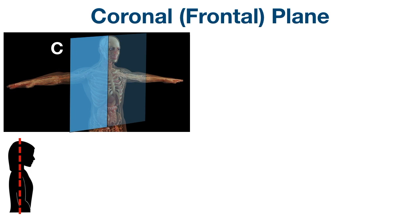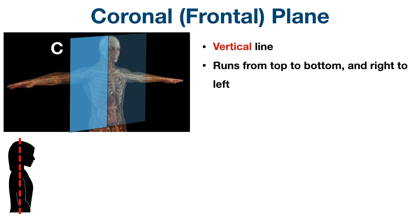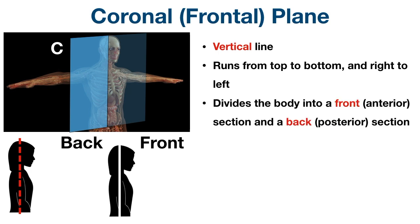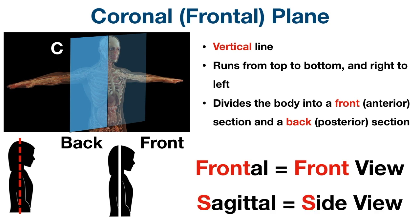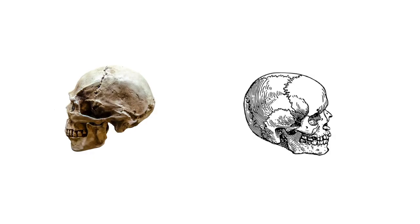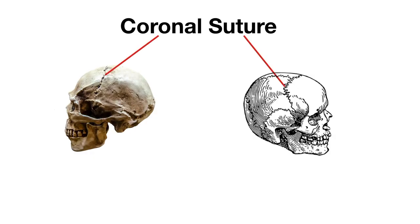Moving on to the coronal plane — the C in our abbreviation SCT. The coronal plane is also called the frontal plane, and it is also a vertical plane. The imaginary line runs from top to bottom and right to left, dividing the body into a front section and a back section. The frontal plane gives you a front view of the body. You might also remember the coronal suture from the video on cranial bones — it runs from right to left in the coronal plane, where the frontal and parietal bones of the skull meet.